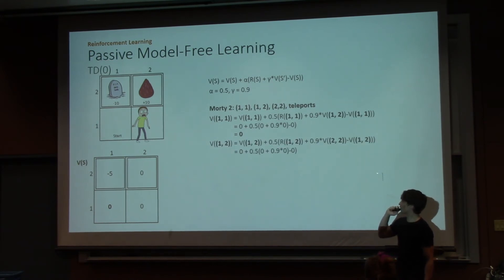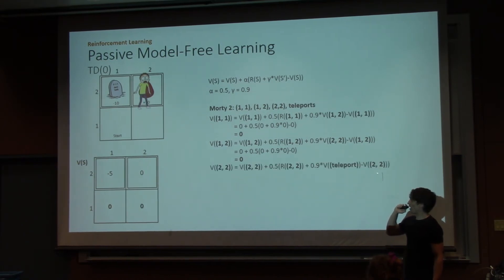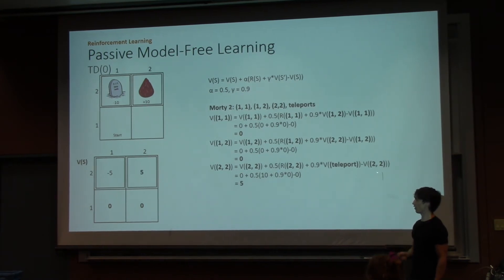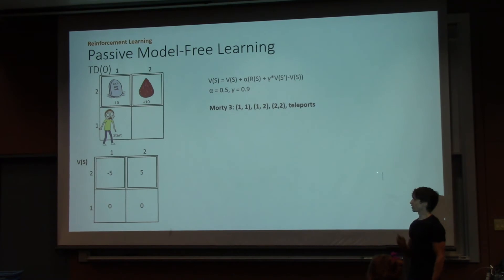From 1-2 to 2-2, it's zero again, so he's going to go up here. And then from 2-2, he gets teleported out with a value of five. So, Morty gets teleported, and the state that he just left gets updated with the new value.